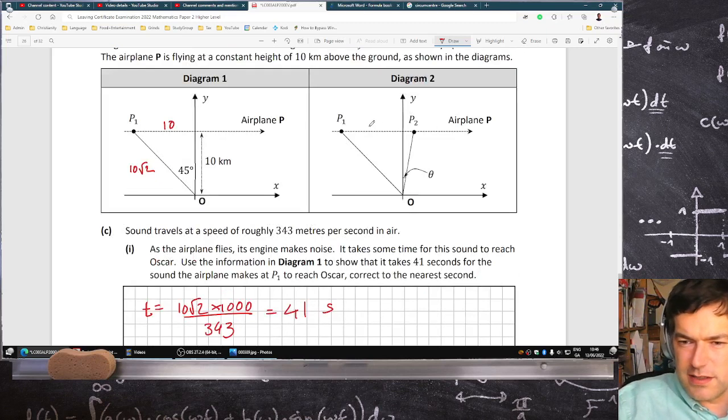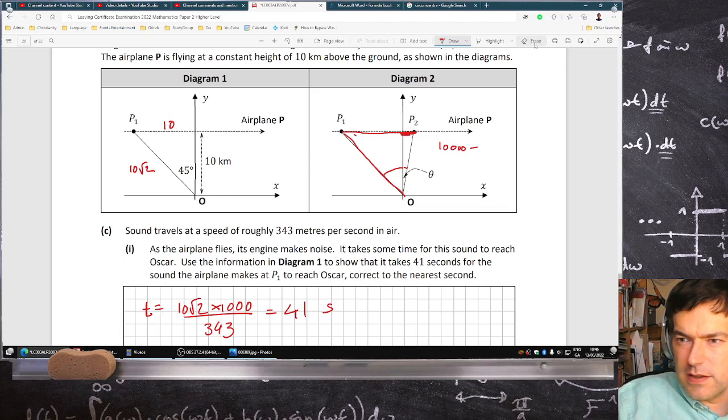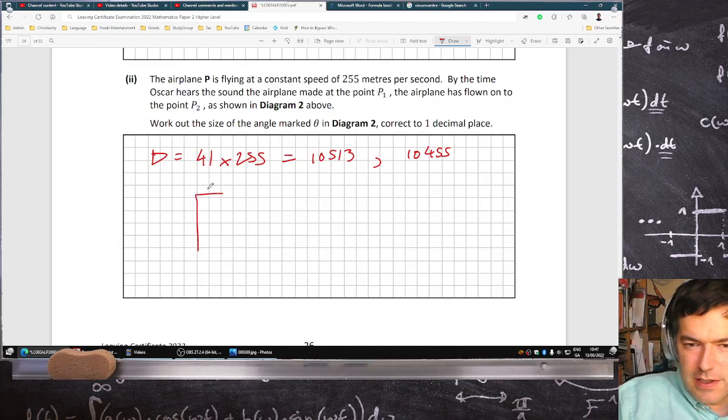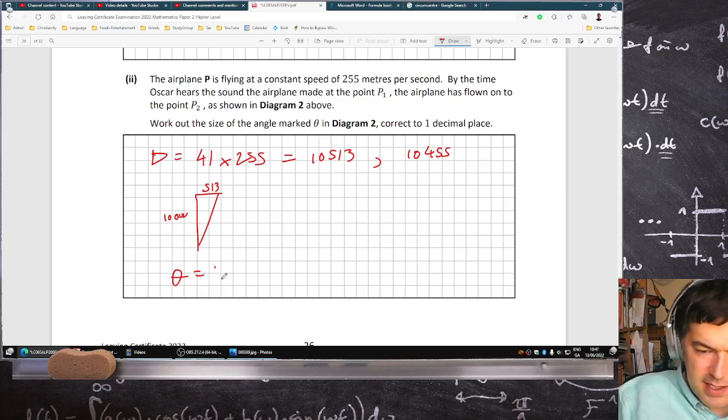Anyways, what are we looking for? The theta. So I know this distance, I know this distance, I know this angle. I want this angle here. The distance it traveled was 10,513, so it means there must have been 513 here, and we know that this is 10,000. So it's tan inverse: tan inverse of 513 over 10,000. To one decimal place, that's 2.9 degrees.